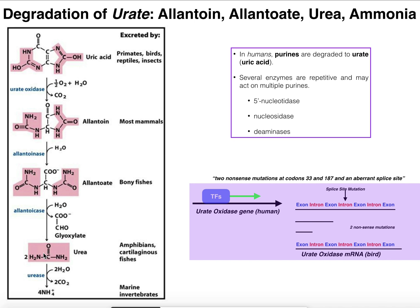Organisms that excrete urea explicitly are going to be amphibians and cartilaginous fishes. Amphibians include frogs, toads, and salamanders; cartilaginous fishes — the chondrichthyes — include sharks and rays. These organisms excrete urea as the purine degradation product because they do not express the enzyme urease.